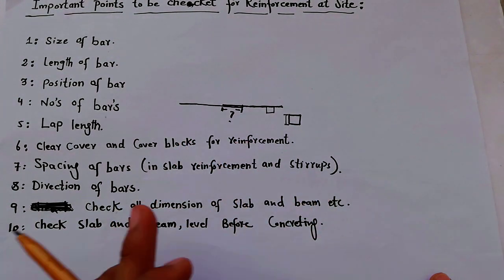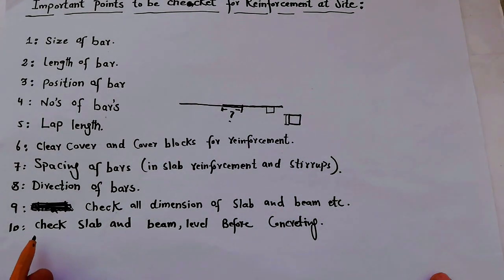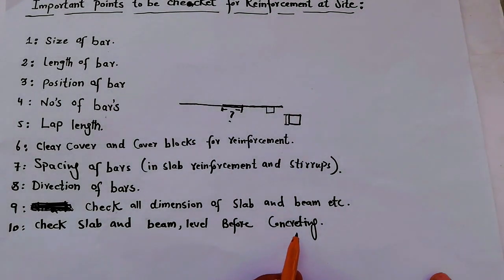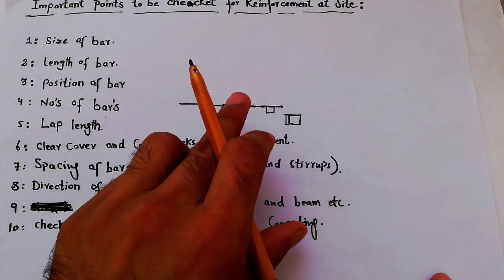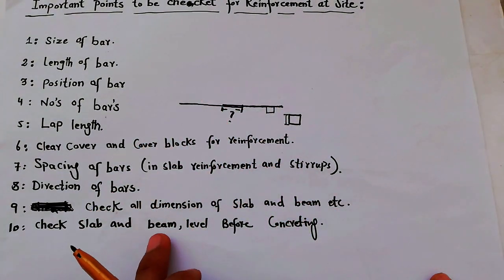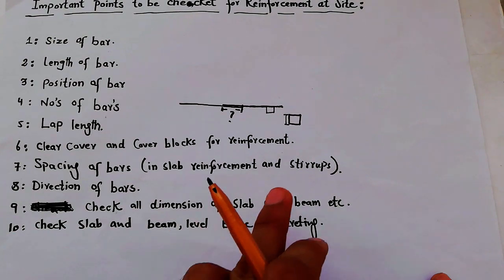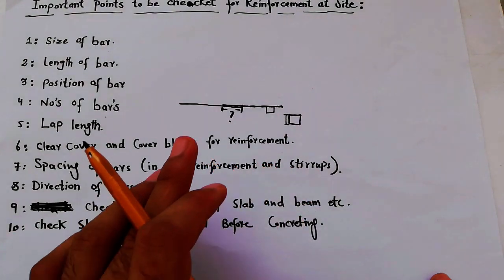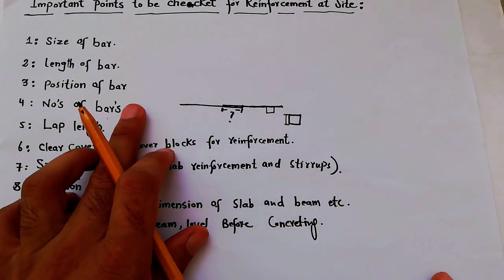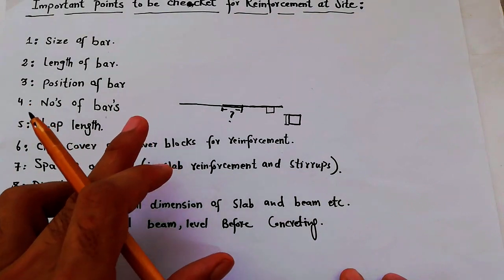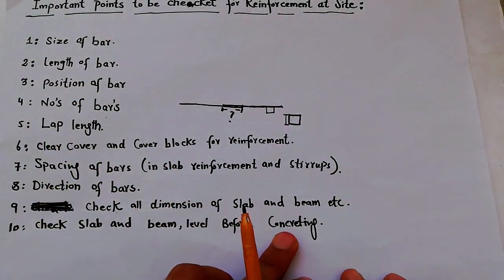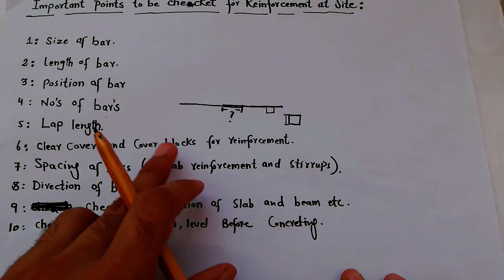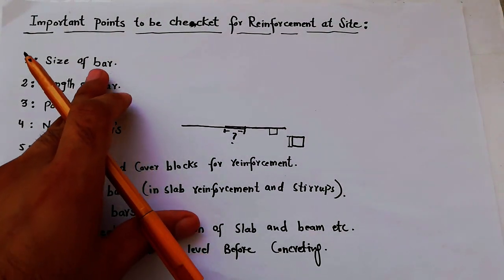The last one: check the slab and beam level before concreting. When you have placed all the steel on the slab, you have to check the level for the beam and slab. Without checking the level, you should not start concrete work. If the level of the beam and column is okay, then you can start the concrete work.